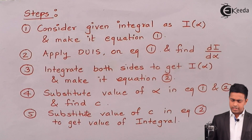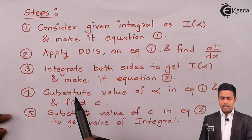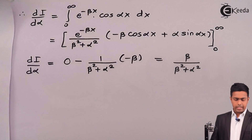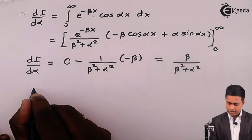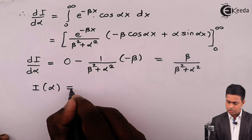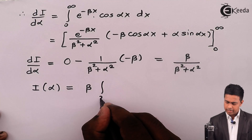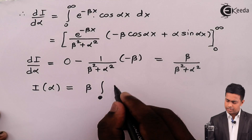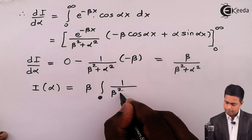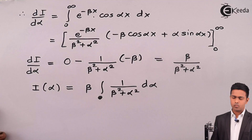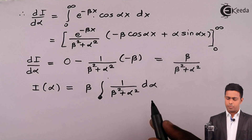As per step three, we will integrate both sides to get the value of I(alpha) back. We'll make it equation number two. Integrating both sides with respect to alpha: I(alpha) equals — beta is a constant so take it outside — the integration of 1 upon (beta squared plus alpha squared) d alpha, without limits.